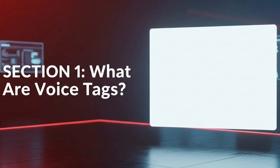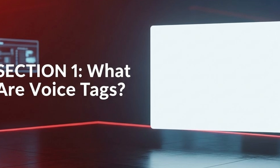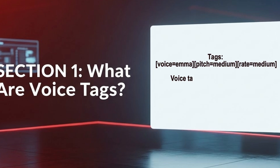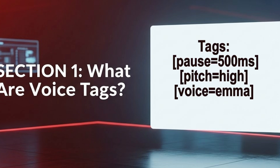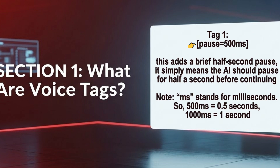Section 1: What are voice tags? Voice tags are short instructions you insert into your script to control how the voice speaks. They work just like stage directions, telling the AI how to deliver the lines. Here are some examples showing on your screen. Tag 1 adds a brief half-second pause — it simply means the AI should pause for half a second before continuing.